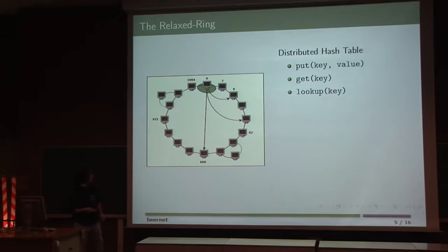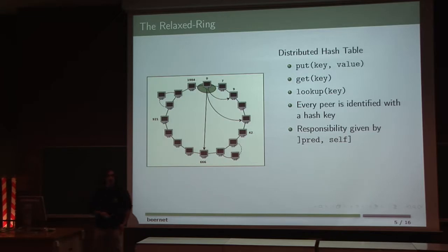This peer here, which has the identifier 0, and this one which is 7, means that the responsibility of this guy is to store all the hash keys that go from 1 to 7. It's a very simple idea. The fingers here will allow you to reach any point in the network in logarithmic number of steps, plus a B, which is what we call a branch in the relaxed ring, which are these nodes that are here, which are experimentally less than 2 in a network of 10,000 nodes.